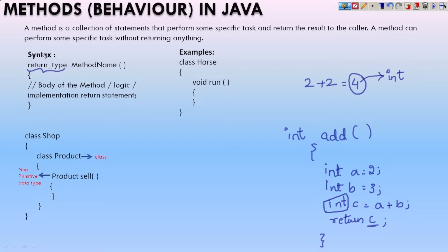A method can also perform some specific task without returning anything. If you don't want it to return anything, you have to give the return type as void. Void means empty — it is not going to return anything.